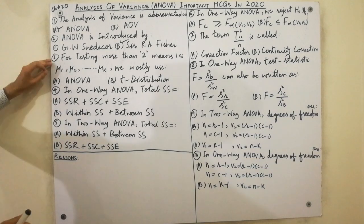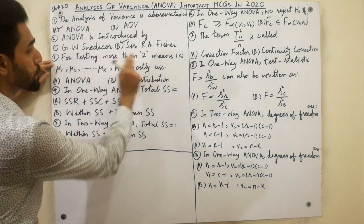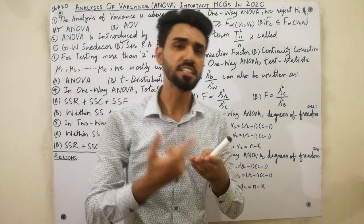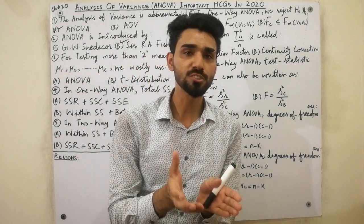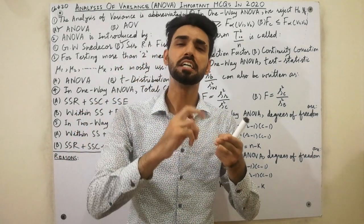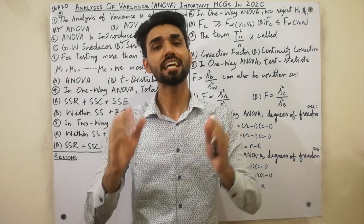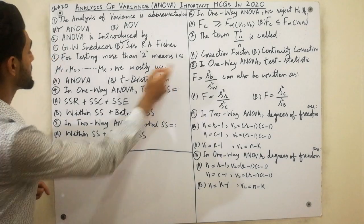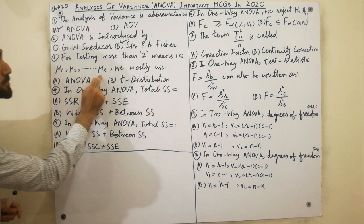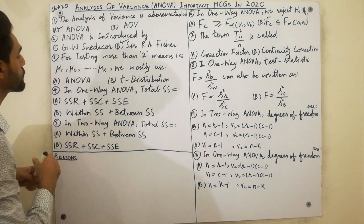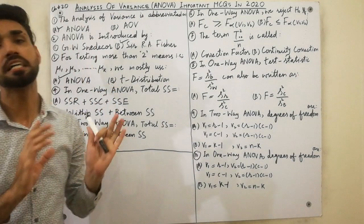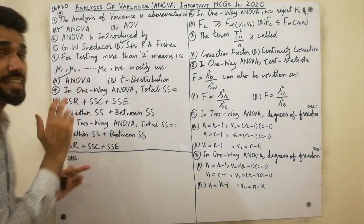The third MCQ is very important. For testing more than two means — mu1, mu2, up to mu_k — we use ANOVA. I have already discussed that we can use z-distribution or t-distribution to test a single population mean or difference of means, but for testing more than two means, we always use ANOVA.